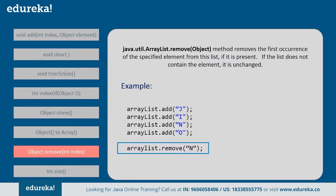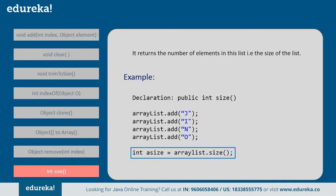Next, the remove method — this method removes the first occurrence of a specified element from the list if it is present. For example, if you want to remove 'n' from the added list, it removes the first occurrence of 'n'. If there is one more occurrence of 'n', it won't remove that. Next, size — this returns the number of elements in the list, that is the size of the list. Suppose we have added four elements, then it returns the size of the ArrayList as 4. Now let's demonstrate all the methods and see how they work.